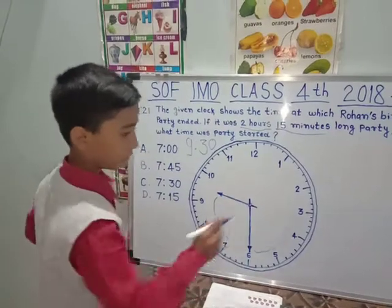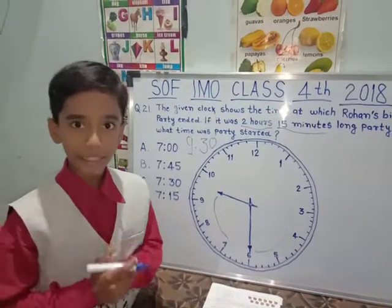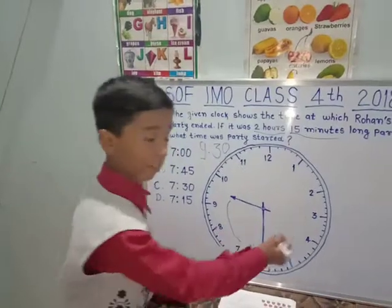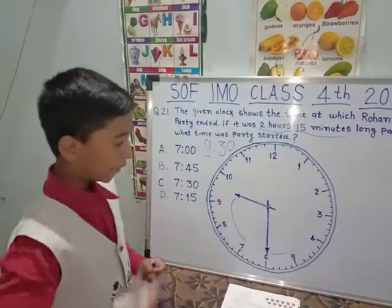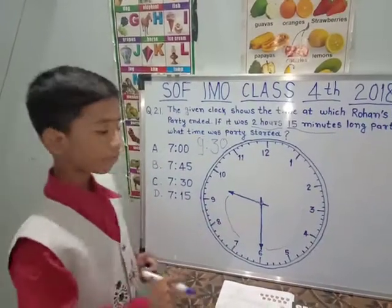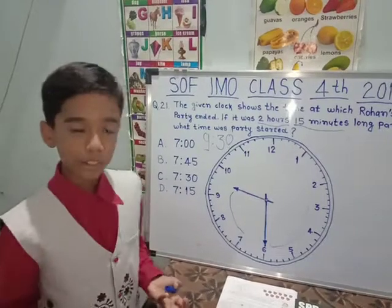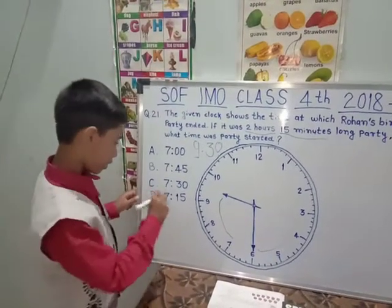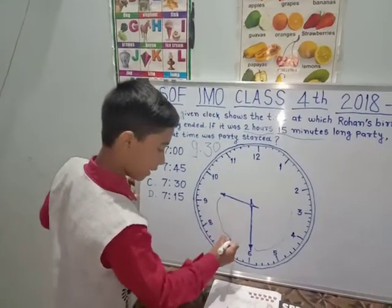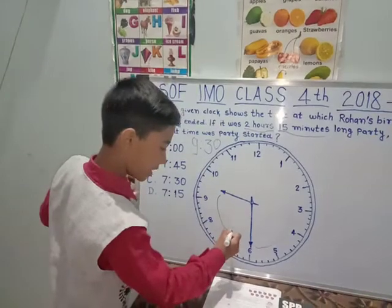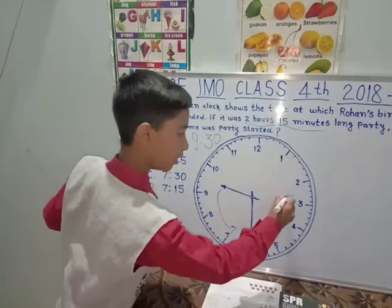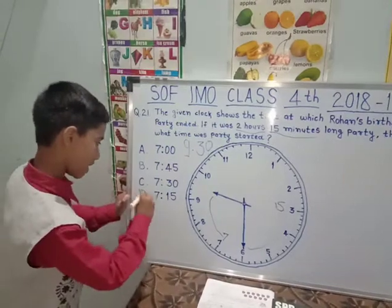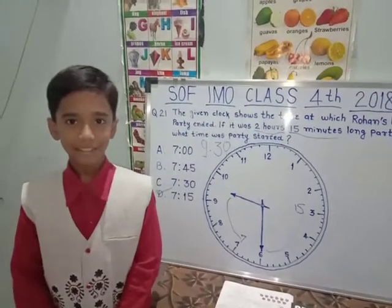So we have got our answer: 7:15. The party started at 7:15 and ended at 9:30. We can also verify by adding 2 hours 15 minutes to 7:15 to get 9:30. So the answer is 7:15.